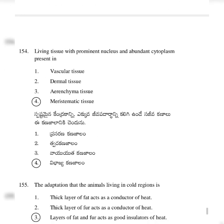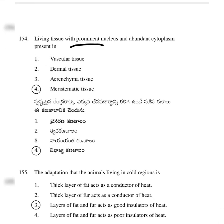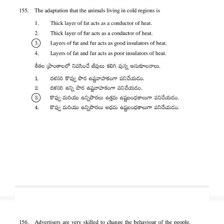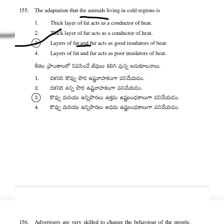Living tissue with prominent nucleus and abundant cytoplasm — option 4: meristematic tissue. The adaptation of animals living in cold regions — option 3: layers of fat and fur act as good insulators of heat, protecting the animal's body.